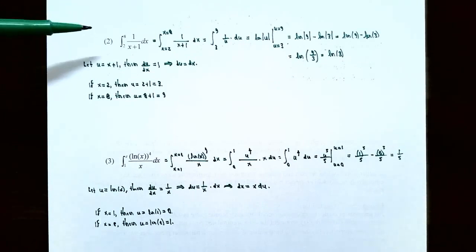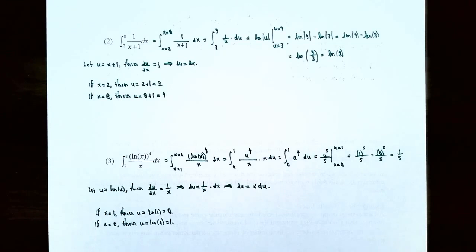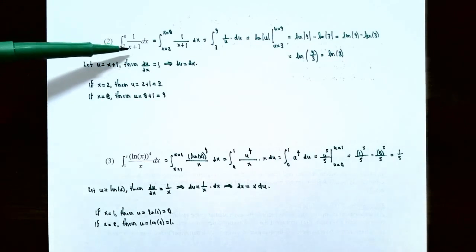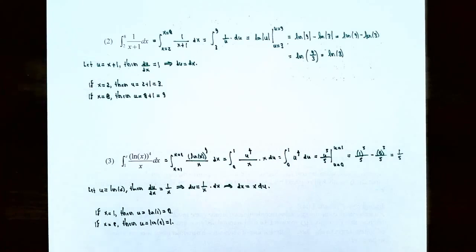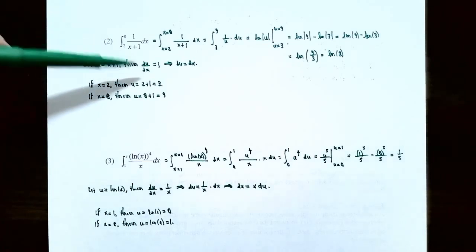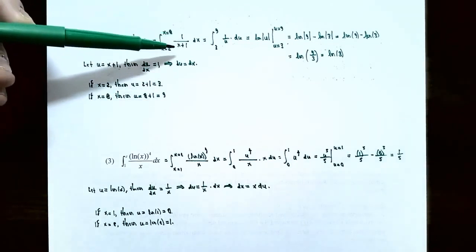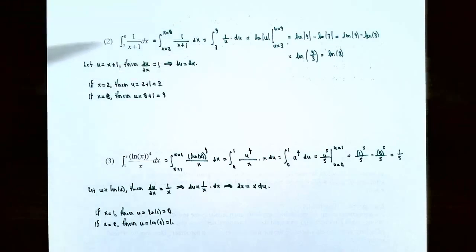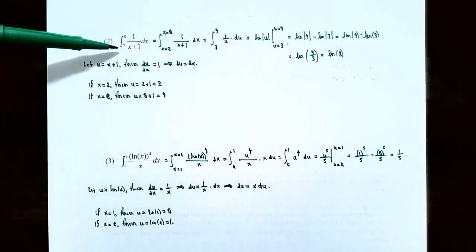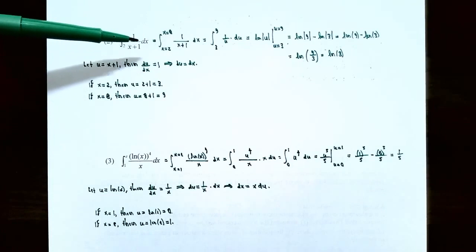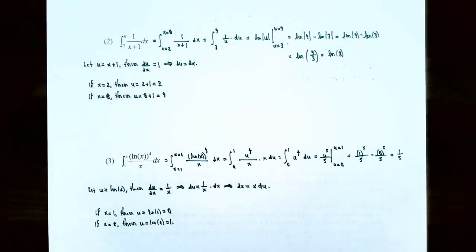Number two: find the value of the definite integral from x equals 2 to x equals 8 of 1 divided by (x plus 1), dx. Notice the integrand isn't just 1 divided by x — it's 1 divided by a function — so we need the substitution method. Let u be the inside function, which is the denominator: u equals x plus 1. Taking the derivative, du/dx equals 1, so du equals dx. We'll replace 1/(x plus 1) with 1/u and dx with du, but the limits x equals 2 and x equals 8 must also be changed to be in terms of u.